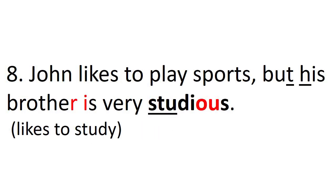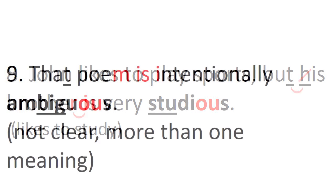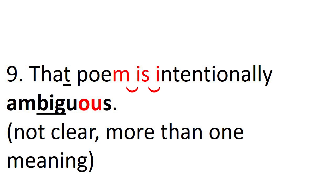Number eight: John likes to play sports, but his brother is very studious. Let's connect 'but his' — the H is going to be eliminated, so the T is between two vowels and sounds like 'but is.' And 'brother is' — let's link that together: brother is. Number nine: That poem is intentionally ambiguous. Let's connect 'poem is intentionally,' and hold the T of 'that.' Make sure you pronounce ambiguous correctly — that's a difficult word to pronounce: ambiguous.